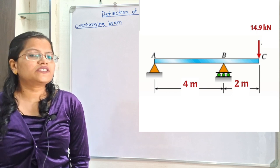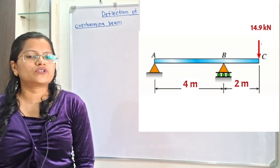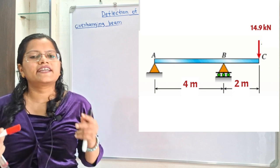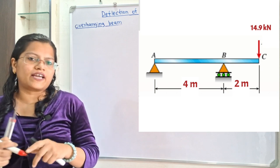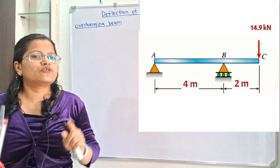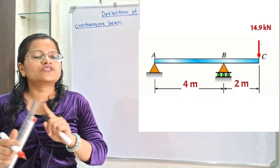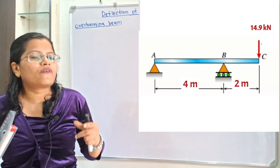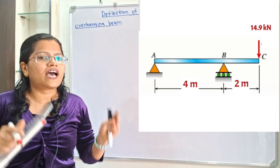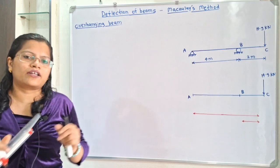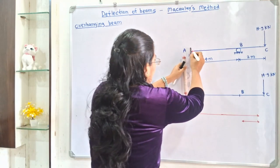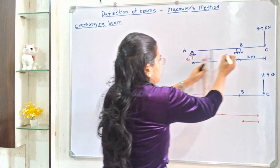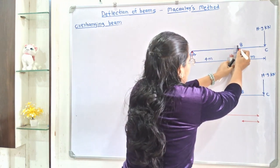Due to these fixed supports, we will show the reactions at these points acting in the vertically upward direction. The magnitudes of these reactions are not mentioned in the question and we have to find out RA and RB.